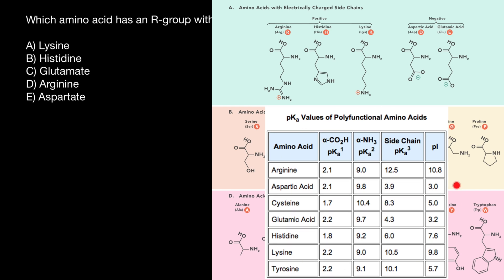In this table we see amino acids that may get a charge in the R group — seven amino acids in total. Amino acids may get a charge not only in the R group, but also in the carboxylic group or amino group.